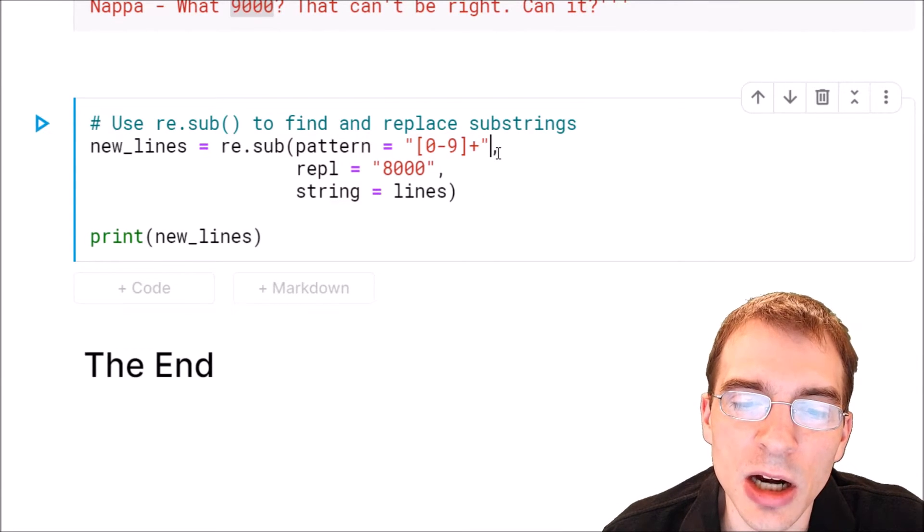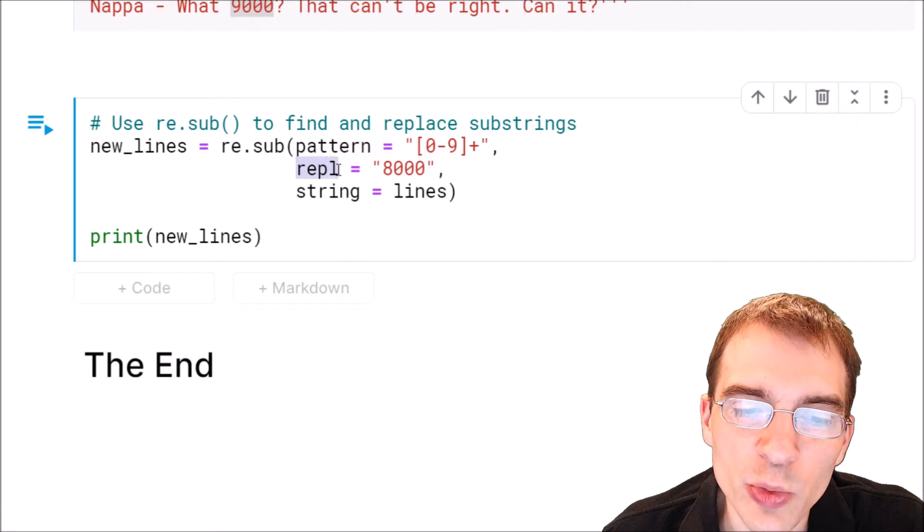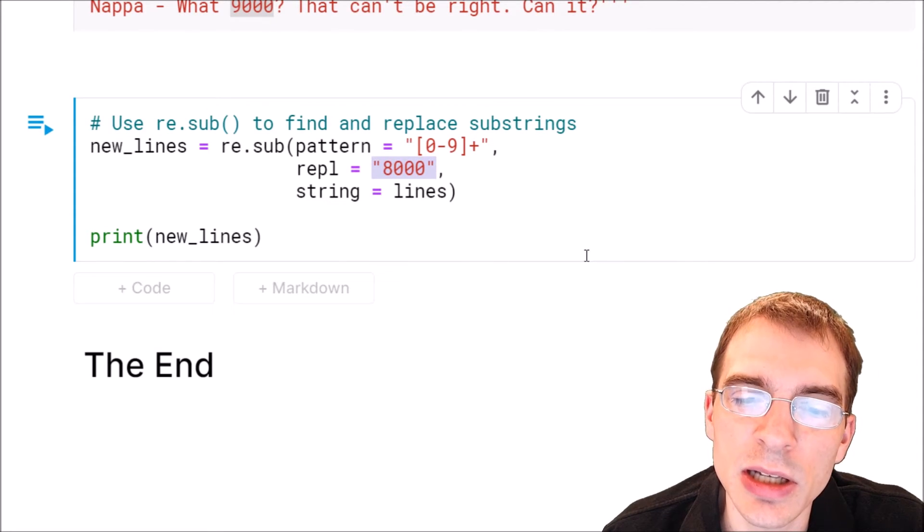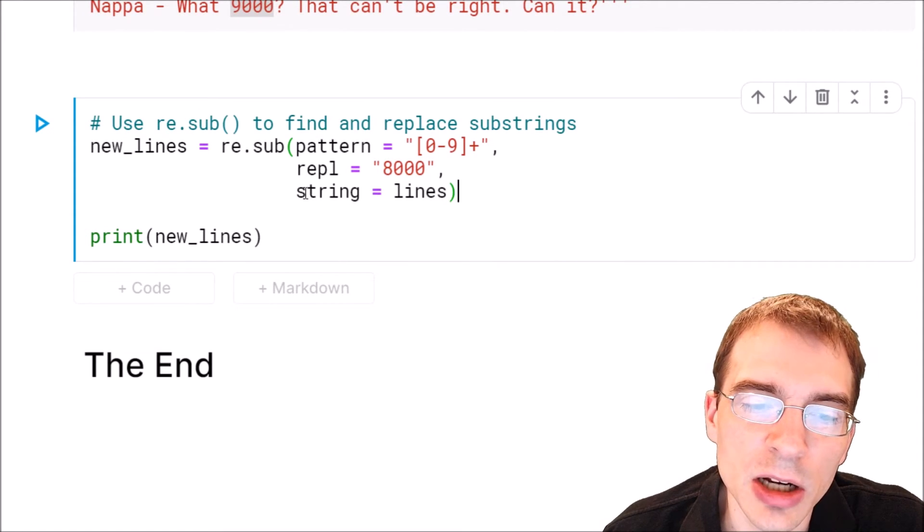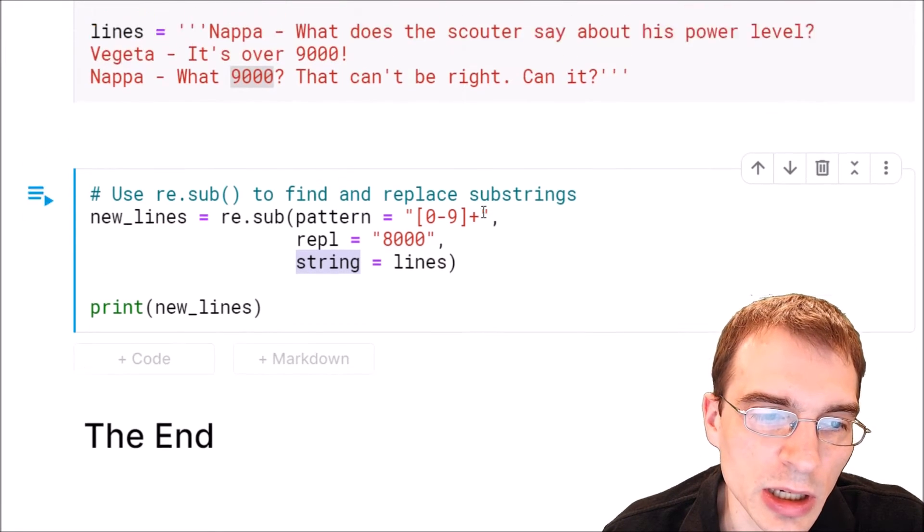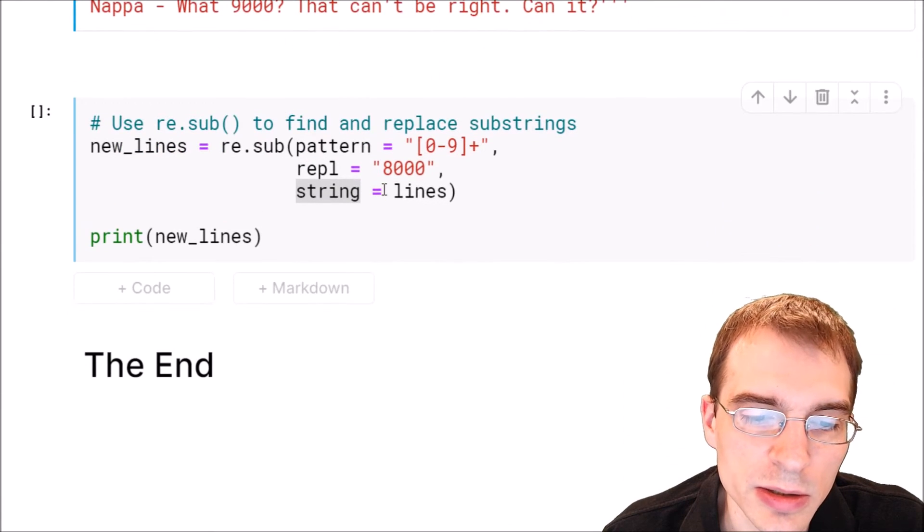And then the second argument, REPL, is the replacement value. We want to replace these numbers with 8,000, so we're just going to pass that string in as the replacement. And then the final argument, string, is just the text string that you want to work on. We call this lines, so that is what we're going to pass here.